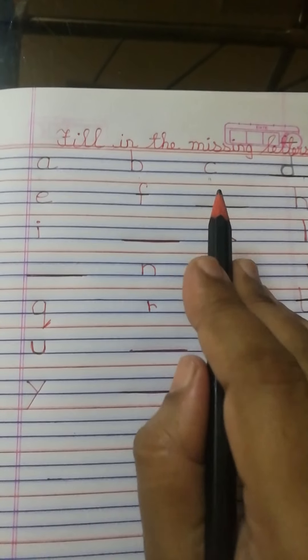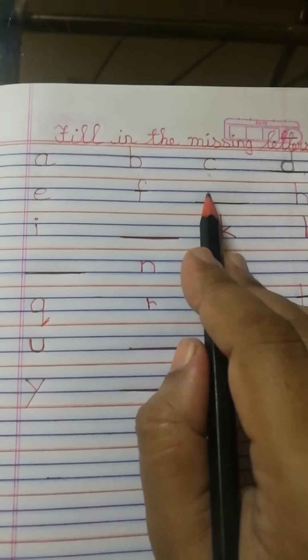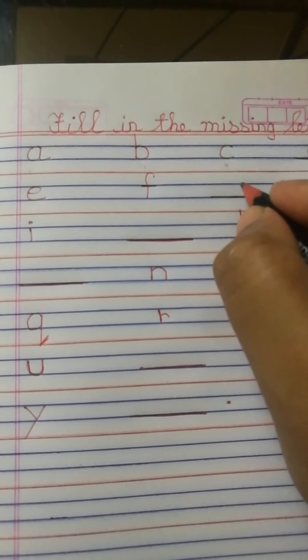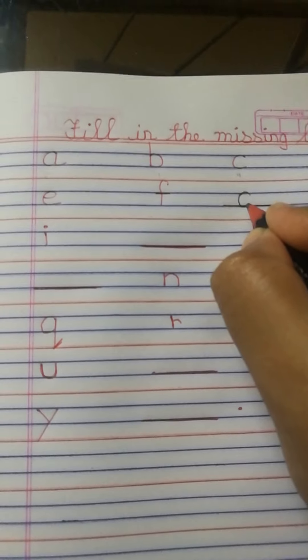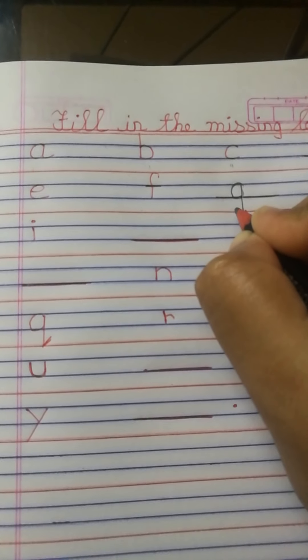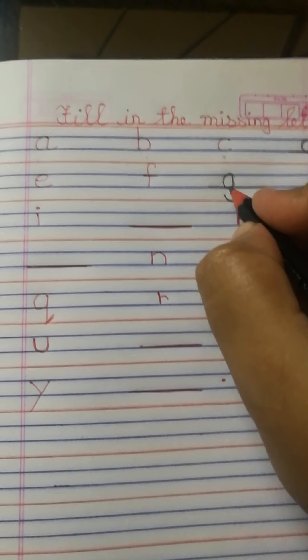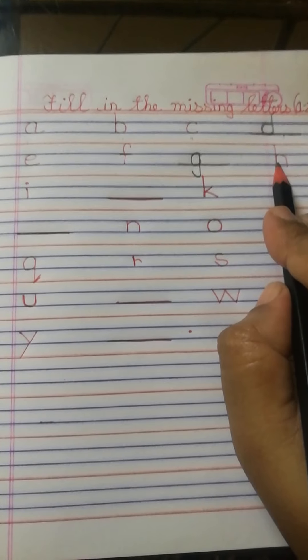So you have to write small d. Here you will write small g — small g is missing, so you will write small g. Small g missing hai, toh yahaan par aap small g likhoge. Now, small g ke baad kya aata hai — small h.